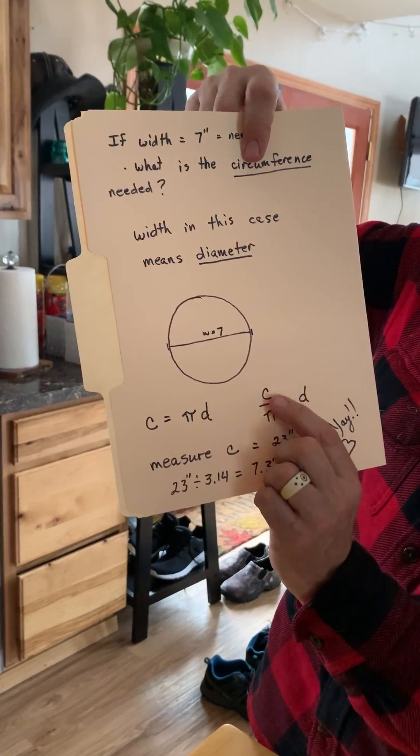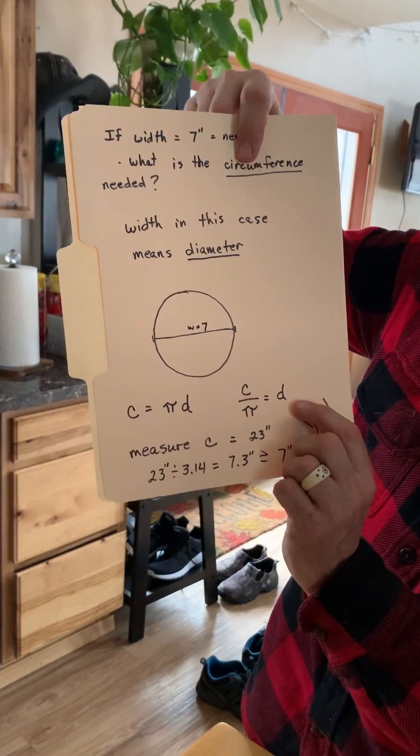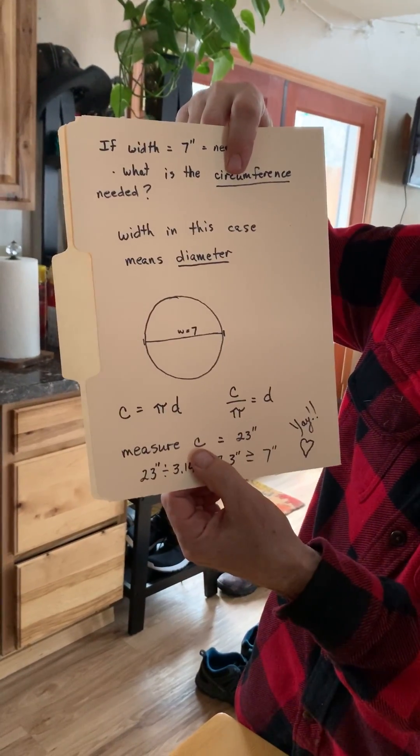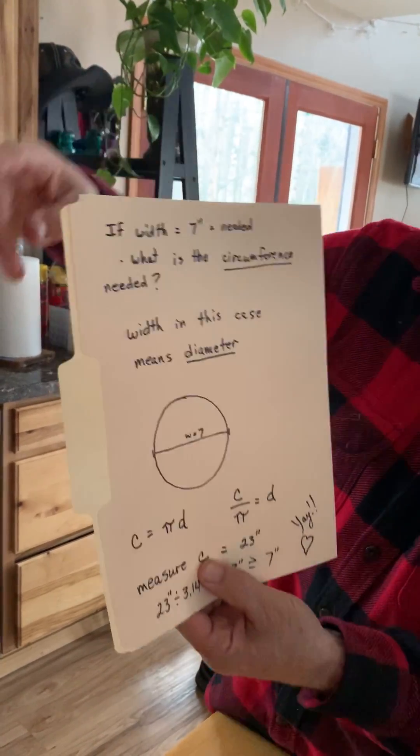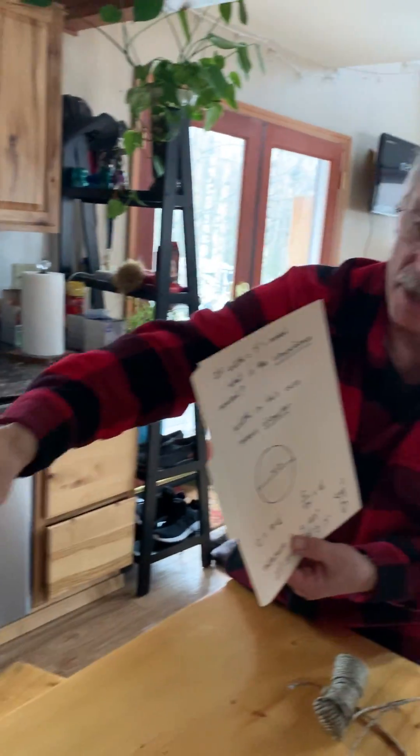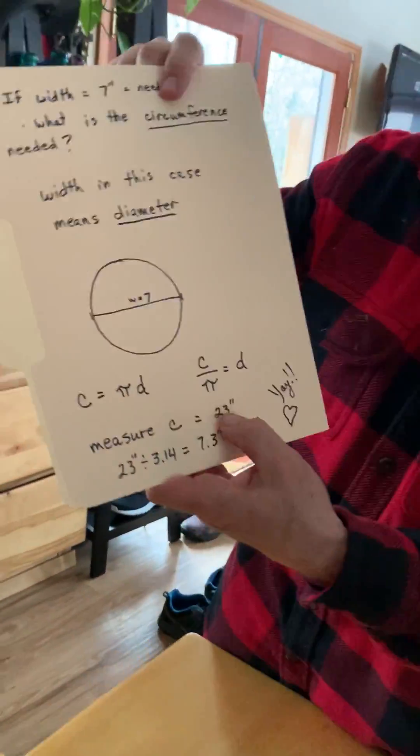And so then the circumference divided by pi is the diameter. So we measure the circumference. And I actually did this on this one, and it ended up being 23 inches.